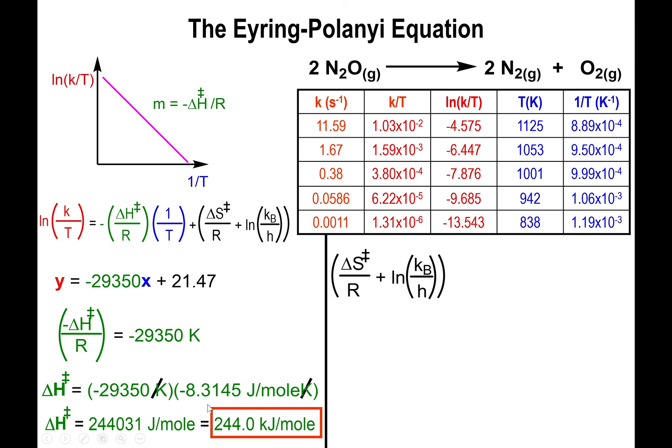The second thing is the intercept. The y-intercept equals the entropy of the transition state over R plus the ln of the Boltzmann constant divided by Planck's constant. The ln of kb over h is just a simple constant.